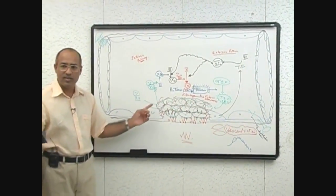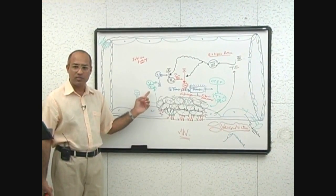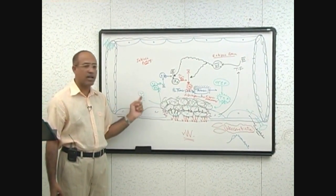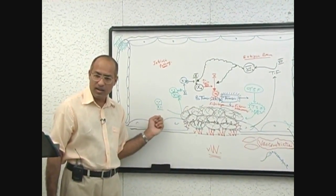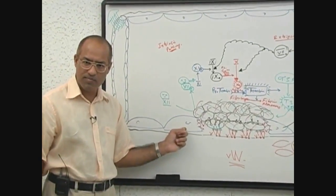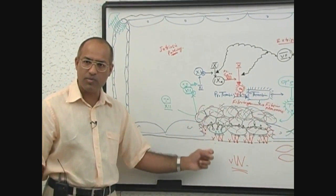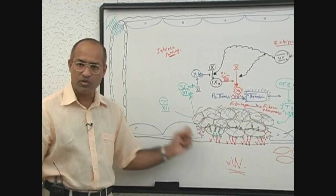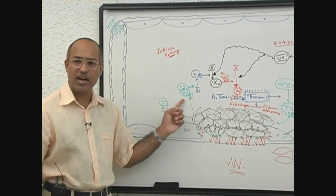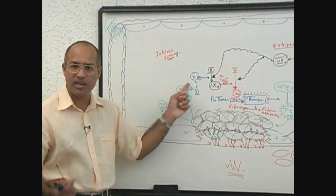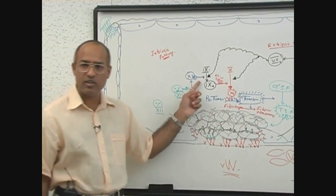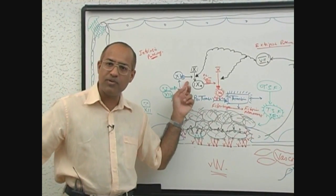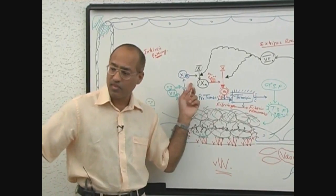For intrinsic pathway, what is required? Simply factor 12 should come in touch with injured endothelium or activated platelets or subendothelial surface. Once factor 12 becomes activated, activated factor 12 activates factor 11, 11 activates factor 9, and 9 in the presence of phospholipid, factor 8 and calcium.